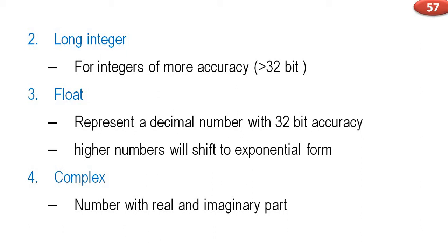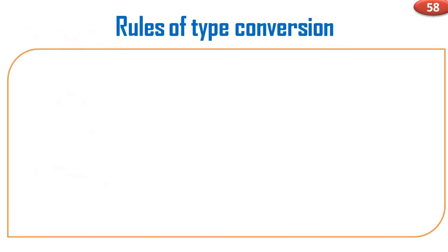Higher numbers will shift to exponential form. Next is complex — a complex number has a real part and an imaginary part; such numbers come under this category. So these are the four numeric data types: integer, long integer, float, and complex number. In addition to these, there is a data type called string.